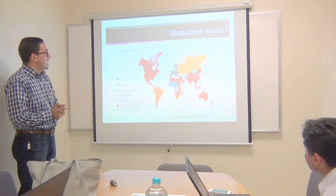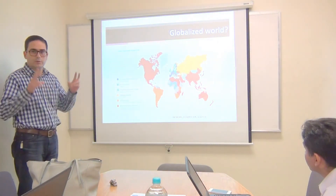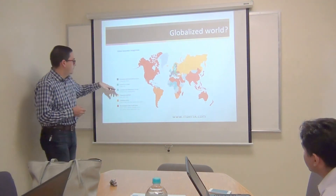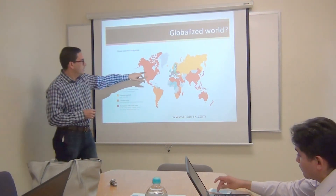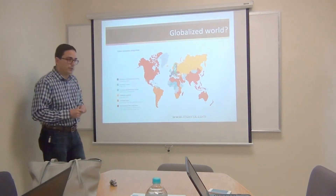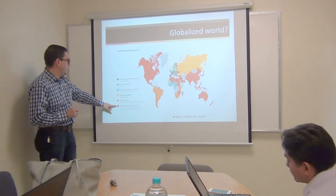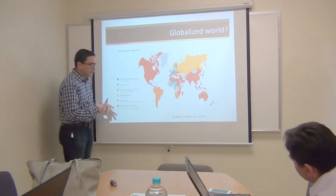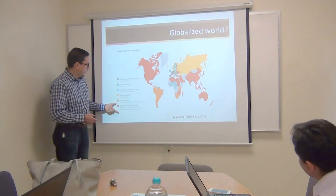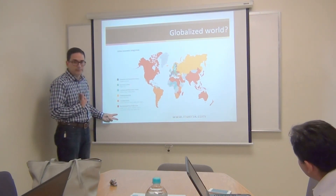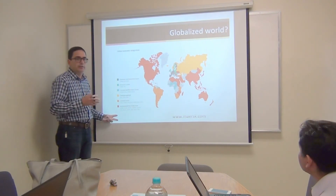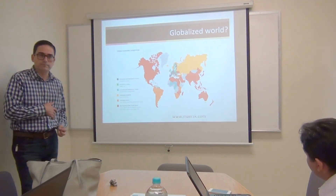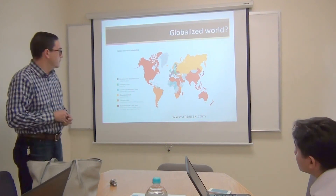This is a map of the globalized world today. We can see some examples: an economic and monetary union only in some countries in Europe, or the case of Canada, the U.S., and Mexico — a multilateral free trade area. The difference is that Europe is a political union, while in our case it is not a political integration — it's only open frontiers for the free flow of investment, goods, services, and manufacturing products.